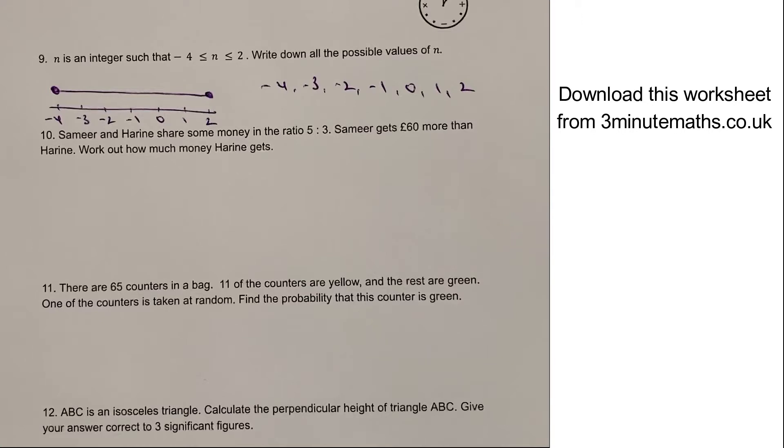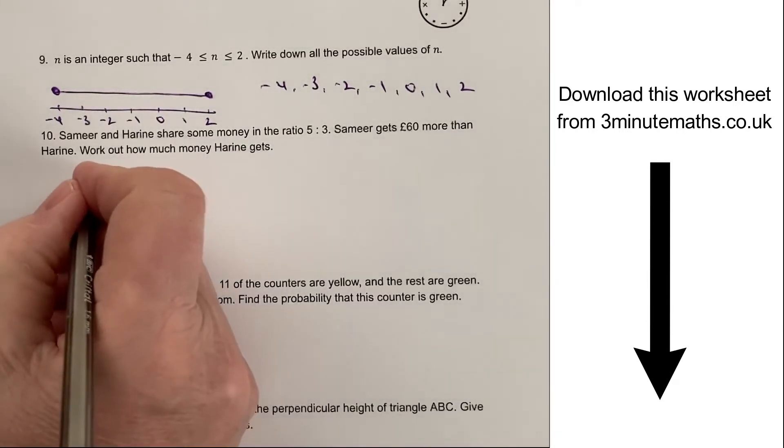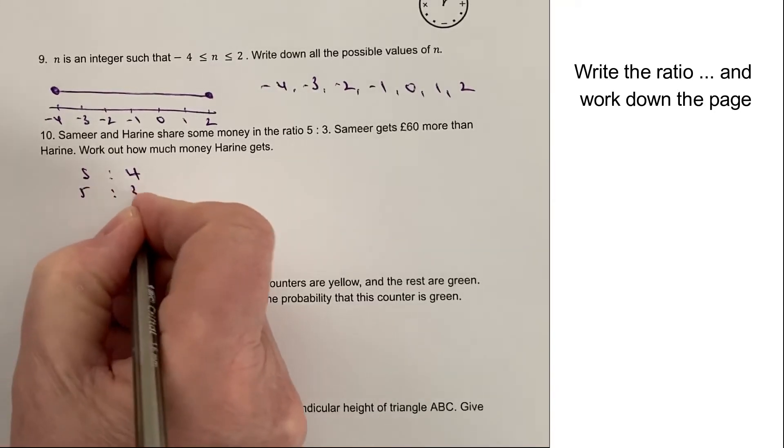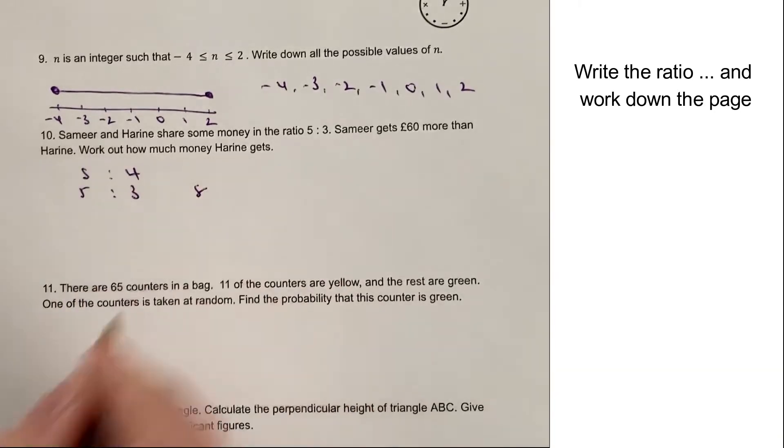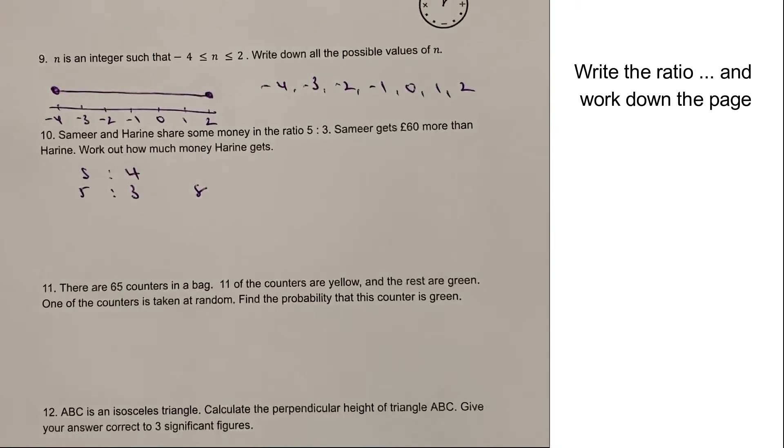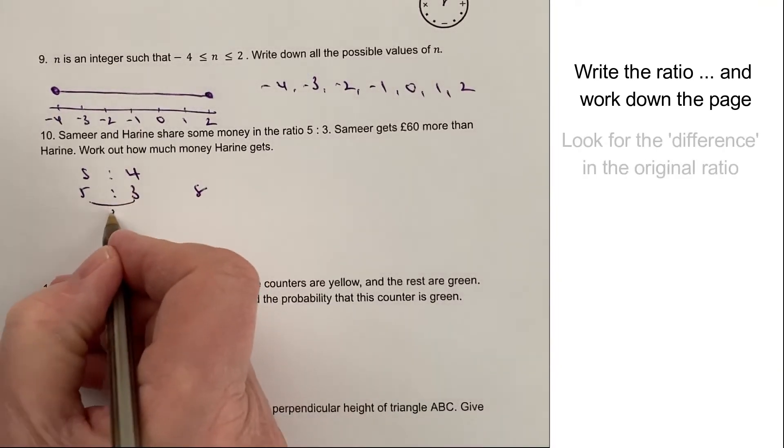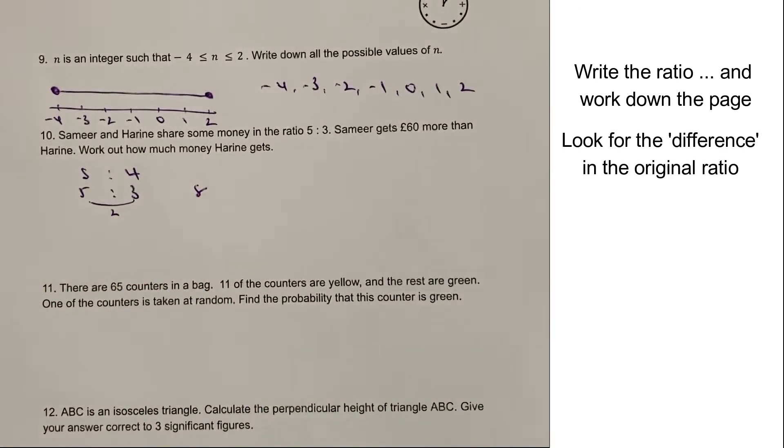Samir and Harin have some money in the ratio of five to three. So Samir gets 60 pounds more. But let's have a look at how it is at the moment. So we've got Samir and Harin have some money in the ratio of five to three. So basically, if they shared eight pounds, Samir would get five pounds and Harin would get three pounds. But importantly, the difference between the two is actually two pounds.